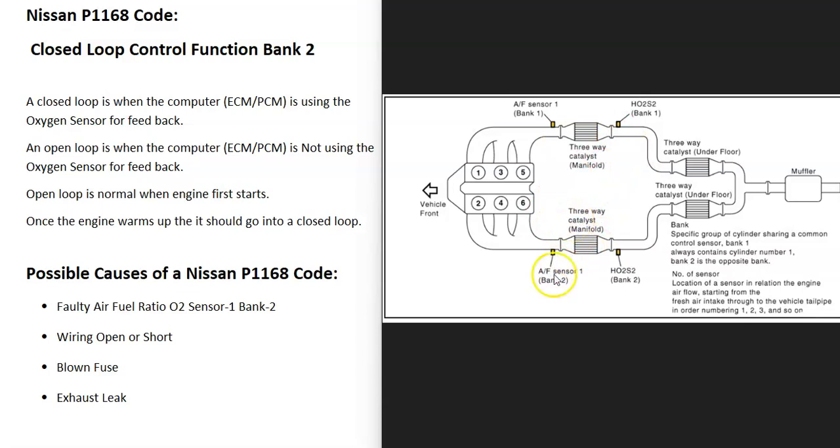It can be a good idea to get a diagram for your specific Nissan where all these O2 sensors are located. It just makes it easier. For example, this is a 2011 Nissan Frontier. And as you can see, bank 2 Sensor 1 is located right here, and it's going to be before the catalytic converter.